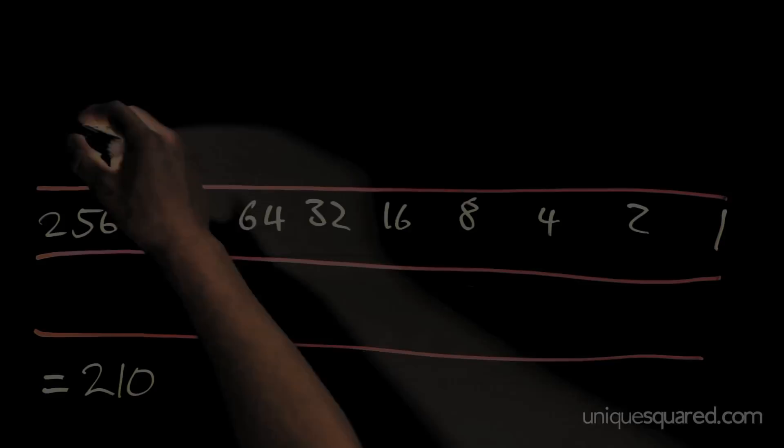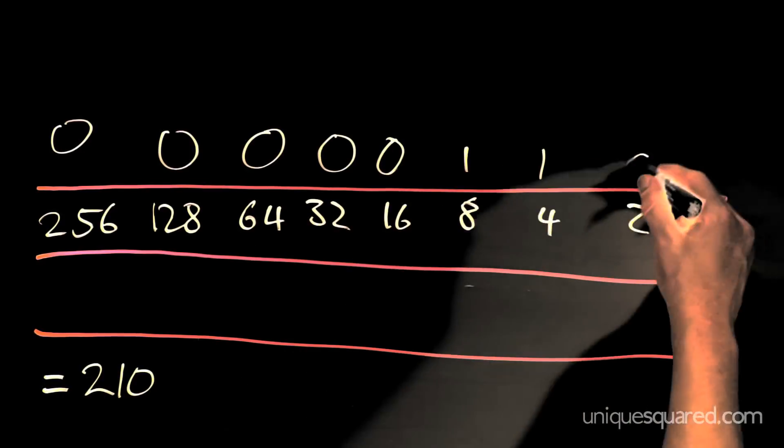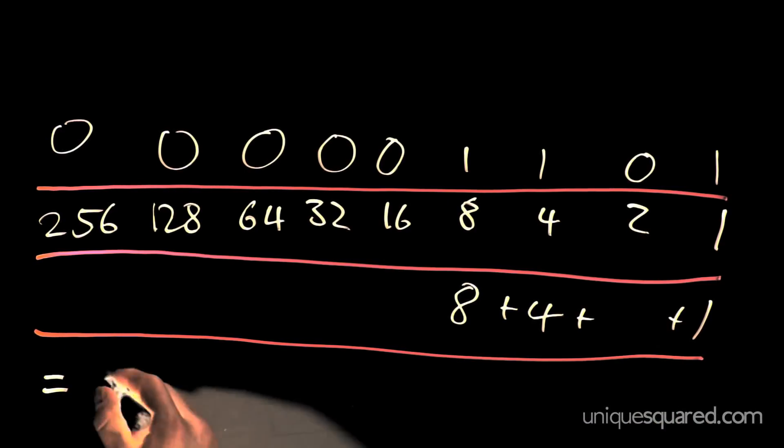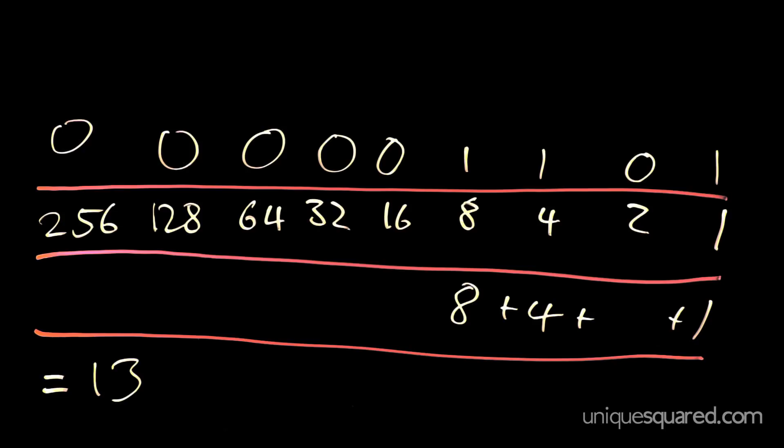Here's yet another example. The corresponding numbers to the 1s are 8, 4, and 1. You add those together, and you get 13. That is the value of that binary number.